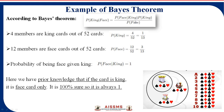First, identify probability of king: four king cards out of 52, so 4/52 equals 1/13. Next, probability of face: 12 face cards out of 52 — four for king, four for queen, four for jack — so 12/52 equals 3/13. Then, probability of face given king: since a king card is always a face card, this probability equals 1.